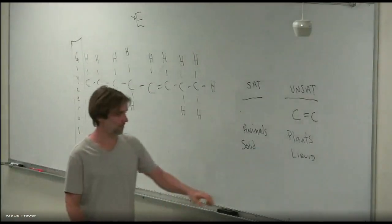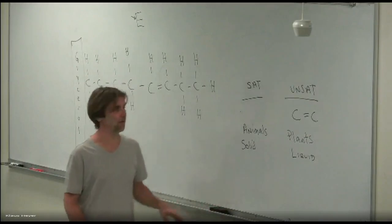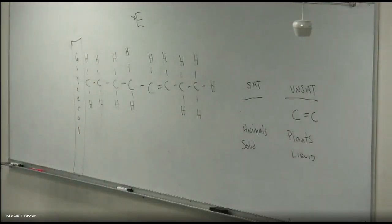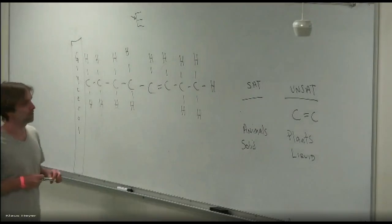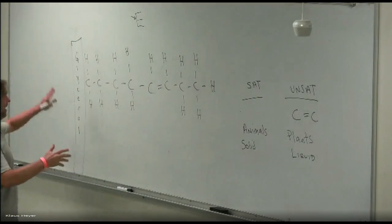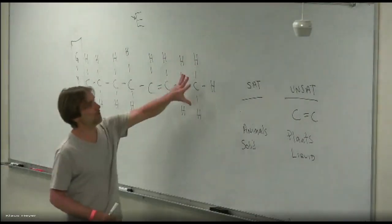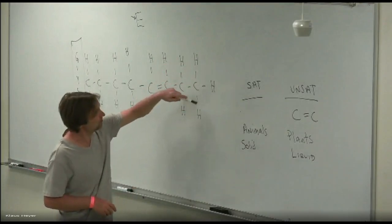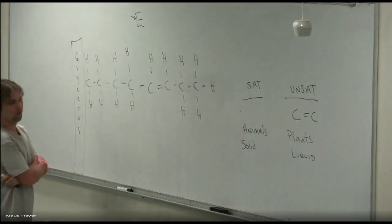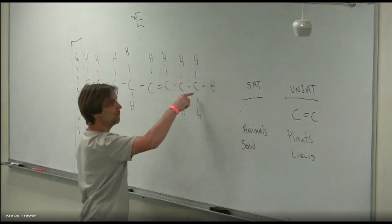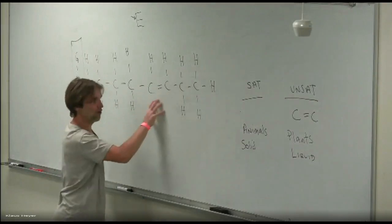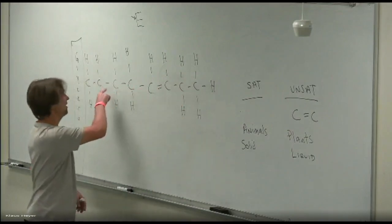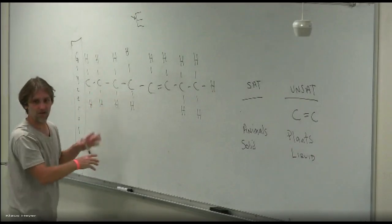Some other things I'm not really going to test you on: you have an alpha end and an omega end on a fatty acid. The omega end is also called the methyl end — whenever you just have hydrogens around the end. If I take the omega end and count in three carbons and there's a double bond there, we call it omega-3. If I count in six carbons and there's a double bond, that would be omega-6. The omega-3s are much, much better.